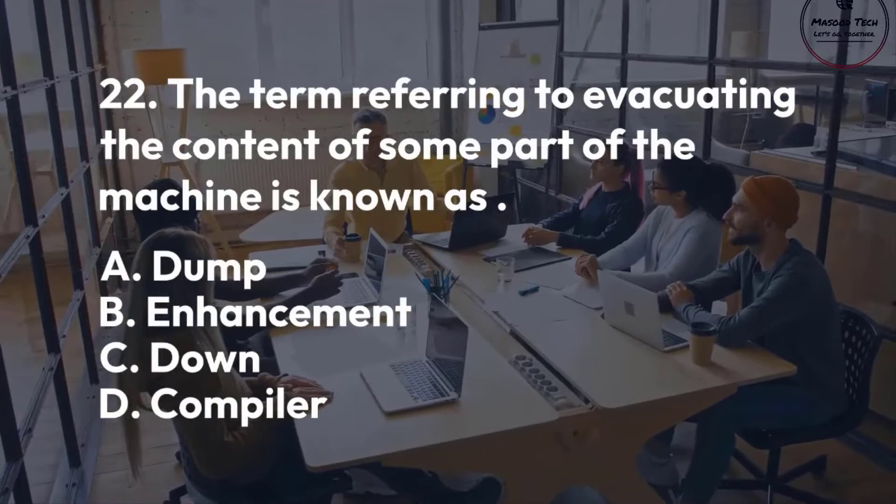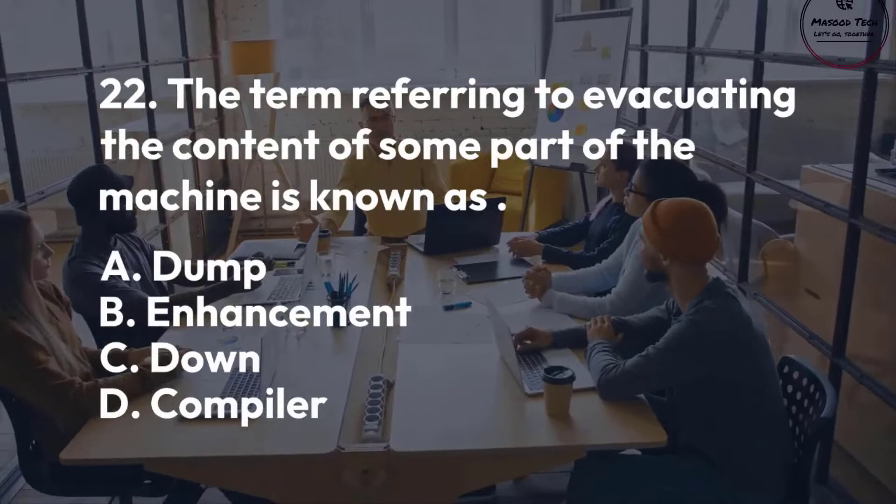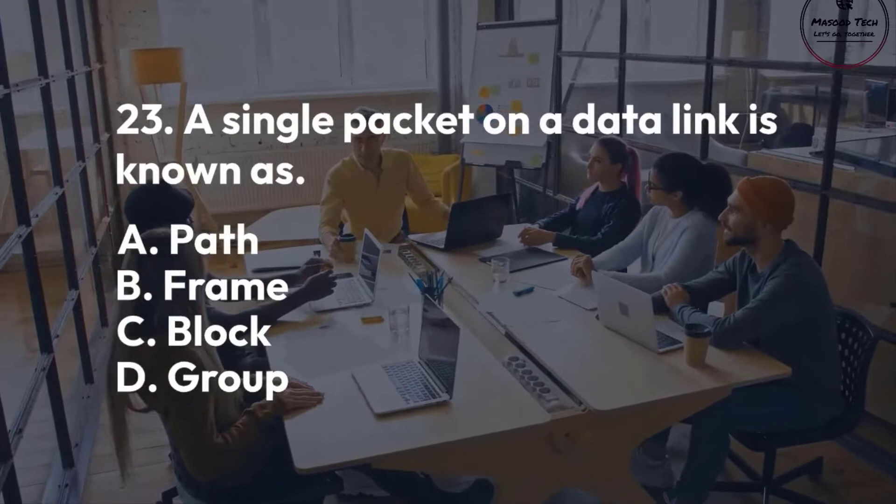Number 23. A single packet on a data link is known as: A. Path. B. Frame. C. Block. D. Group. Correct answer is B.